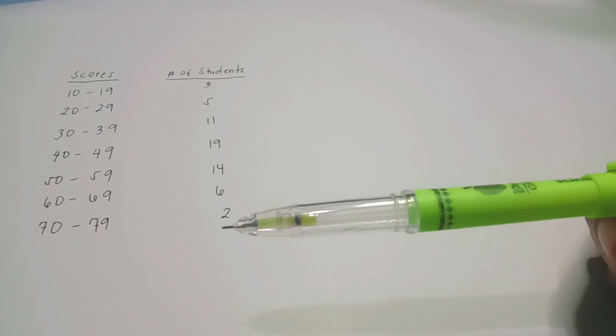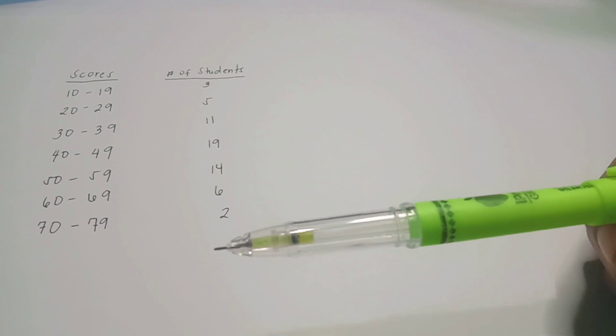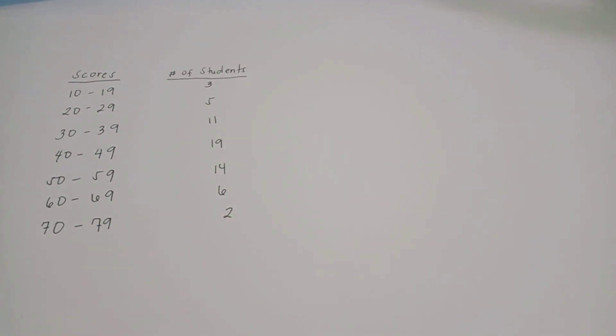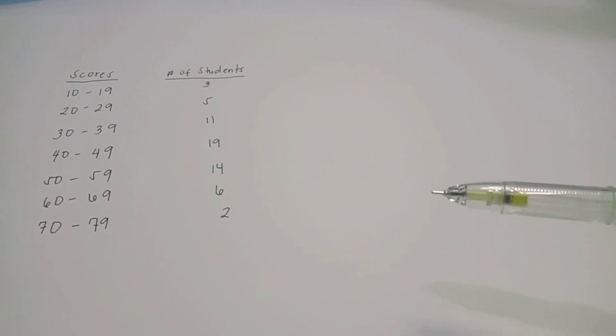By the way, relative frequency shows the proportion or the percent of the cases in each class of the frequency distribution. This is obtained using the formula: relative frequency is equal to the absolute frequency all over the total frequency, times 100.